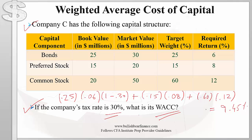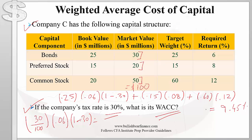Now suppose we were not provided the target weight. In that case we would use the market value of the capital components. We first compute the total market value of the company: 30 million dollars of bonds plus 20 million dollars of preferred shares plus 50 million of common shares gives us 100 million dollars total. The weight of bonds is 30 million divided by 100 million, or 30 percent, times the interest rate adjusted for taxes, plus the weight of preferred shares times their required return, plus the weight of common shares times their required return. We get a WACC of 8.86 percent.